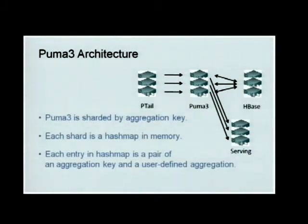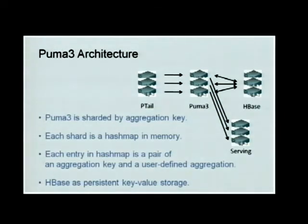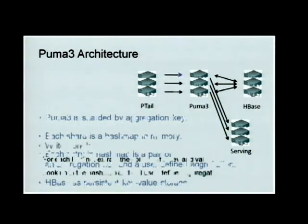The value in the hash table is a user-defined aggregation function — it can be simple counters, sums, or something more complicated like unique users. HBase is used for persistent key-value storage. We just write data to HBase, but we usually do not need to read from it.